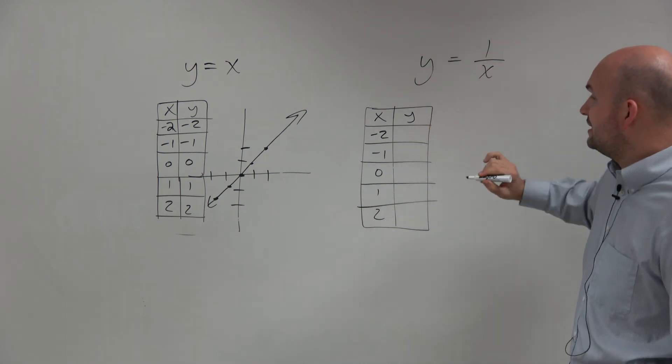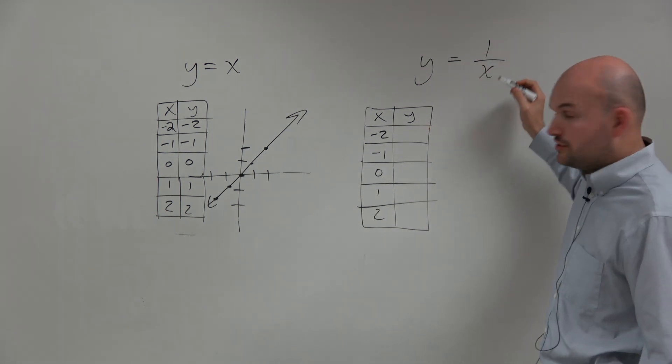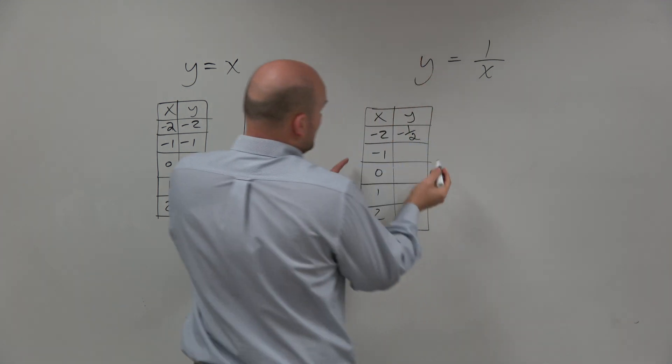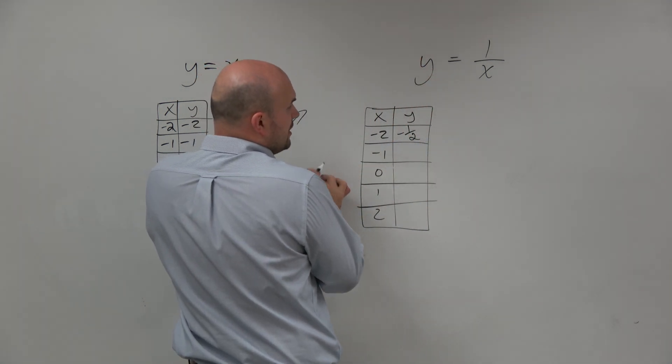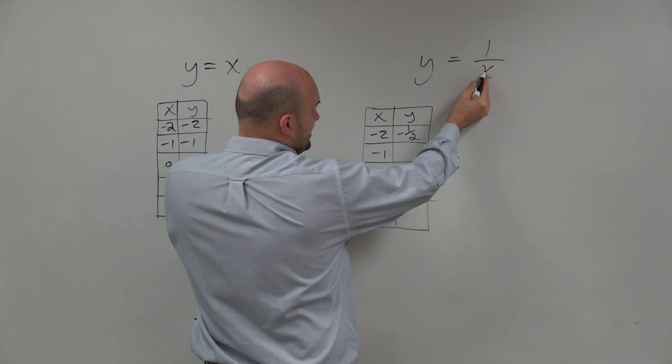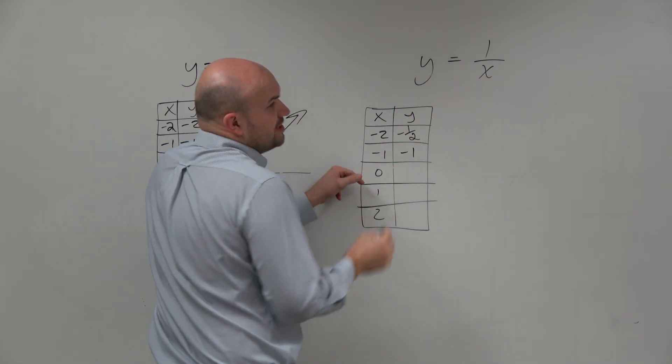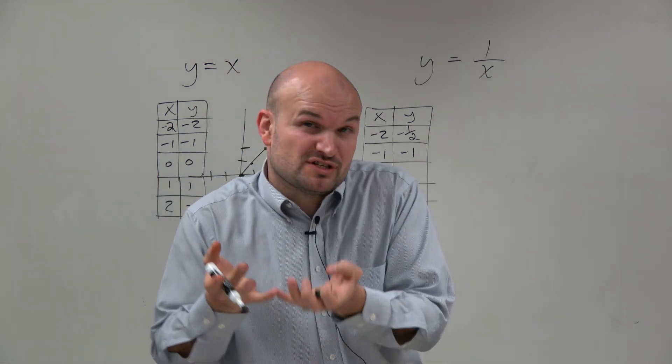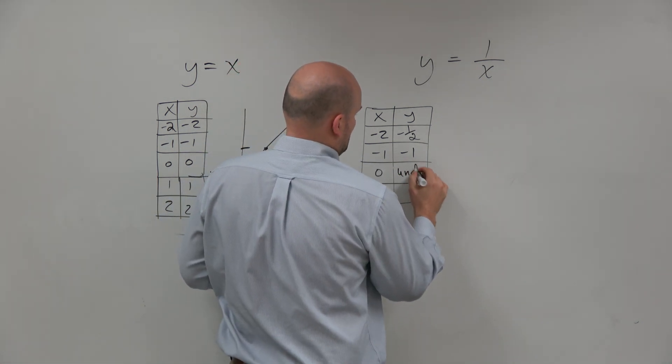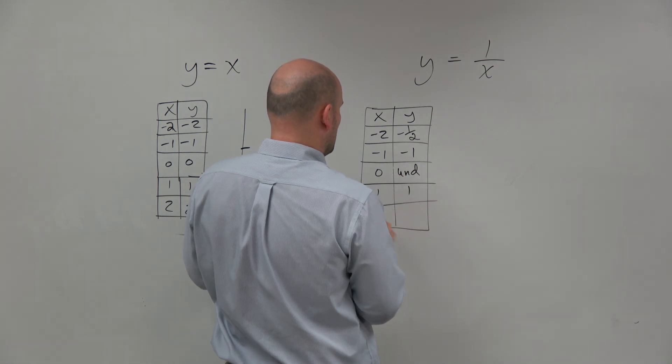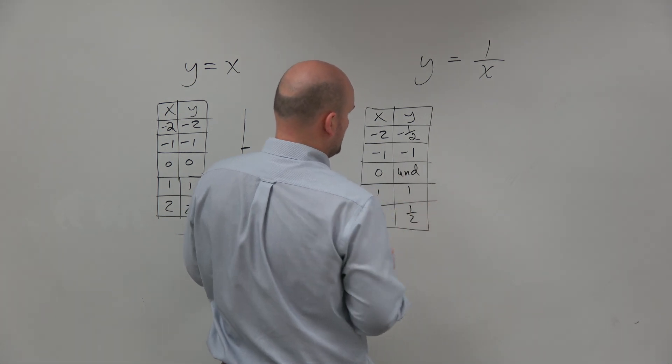When we plug in negative 2, I'm going to have 1 over negative 2, which is negative 1/2. If I plug in 1 over negative 1, I get negative 1. 1 over 0, we need to understand that 1/0 is undefined. 1 over 1 is 1, and 1 over 2 is 1/2.